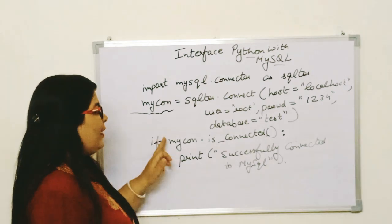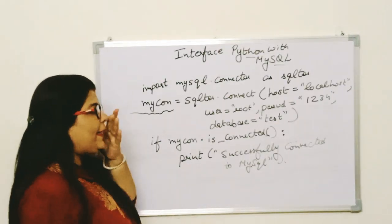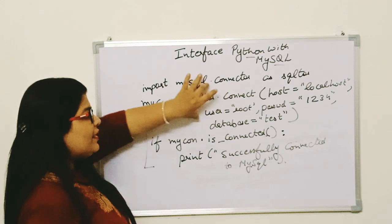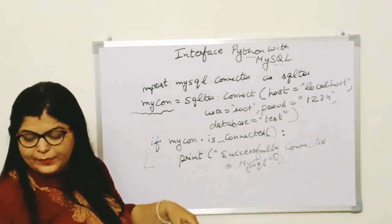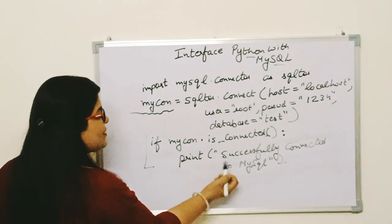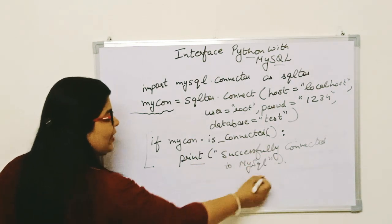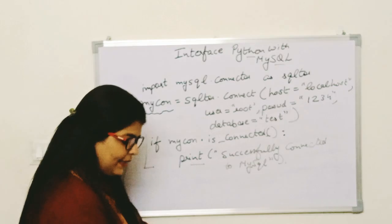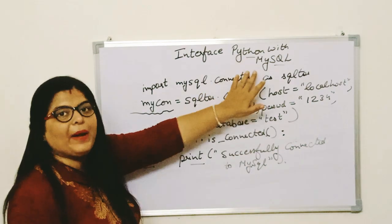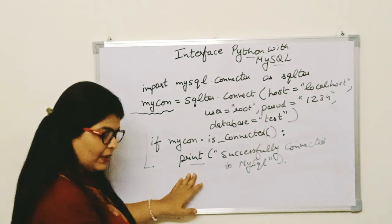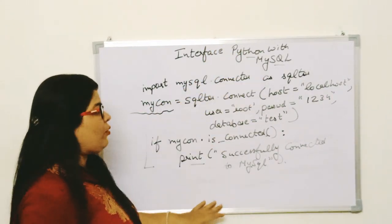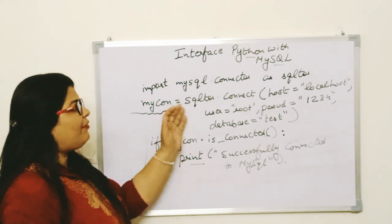Then you simply write: print('Successfully connected to MySQL'). By this function you can easily check whether your code is correctly working or not. If this print statement is not executed, it means you are not connected to MySQL with Python. But if this print command runs, it means Python is properly connected to MySQL.